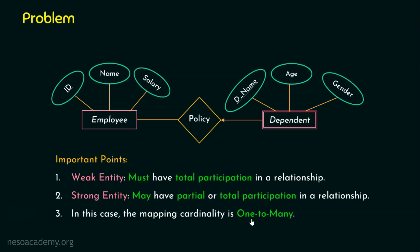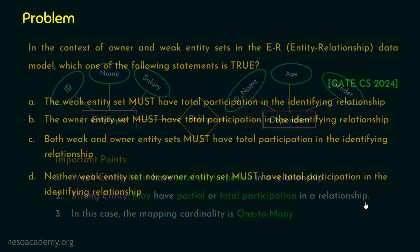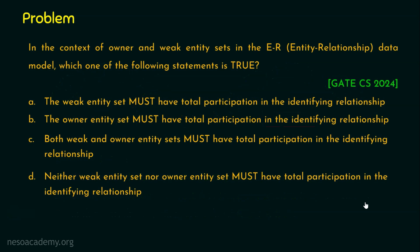With these important points — weak entity must have total participation, and strong entity may have partial or total participation — let's review the answers. Option A: the weak entity set must have total participation in the identifying relationship. This is definitely true.